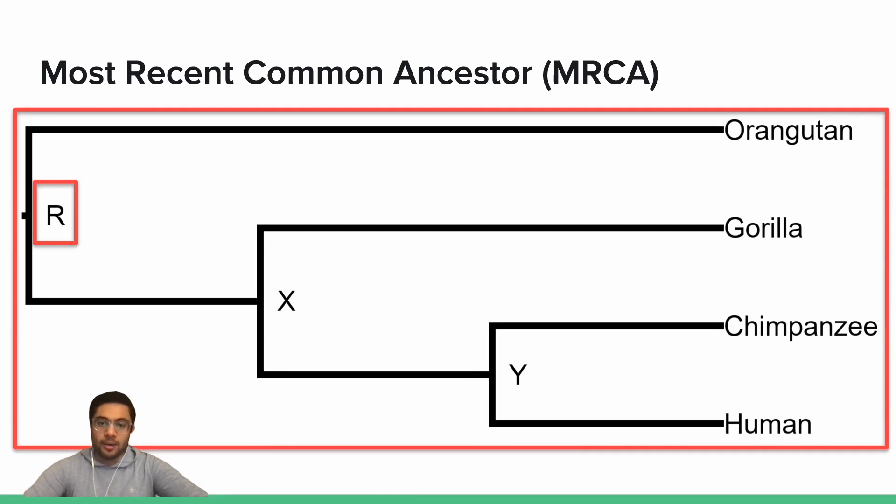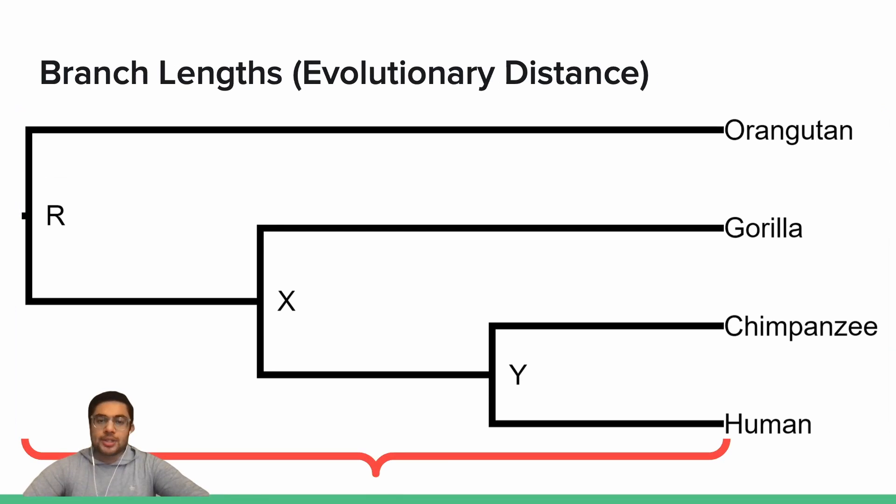In other words, R, which is the root of this phylogeny, is the MRCA of all nodes in the phylogeny. The edges that connect the nodes of a phylogenetic tree represent evolutionary relationships, and their lengths denote some unit of evolutionary distance. For example, millions of years, days, generations, number of mutations, and so on.